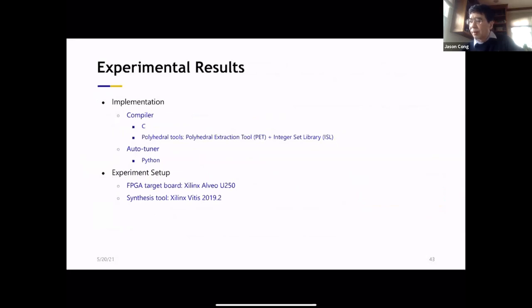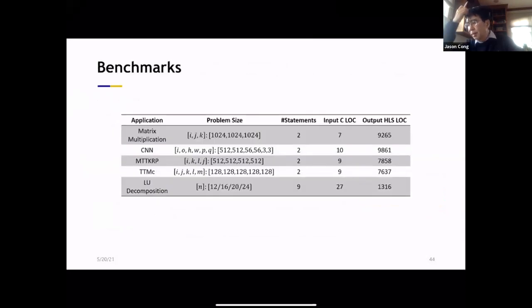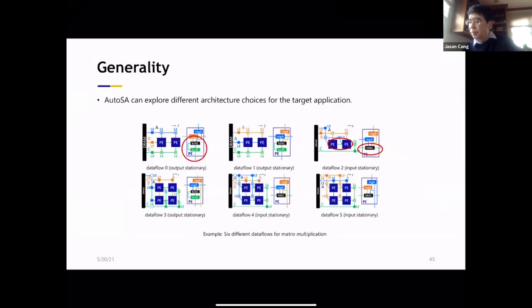So let me tell you some experimental results. This is all fully implemented and it's open source. The tuner is written in Python, the compiler itself is in C. So these are some of the computational kernels we tried. They can be all mapped to systolic arrays. So what's interesting is that we can generate either 1D array or 2D array.